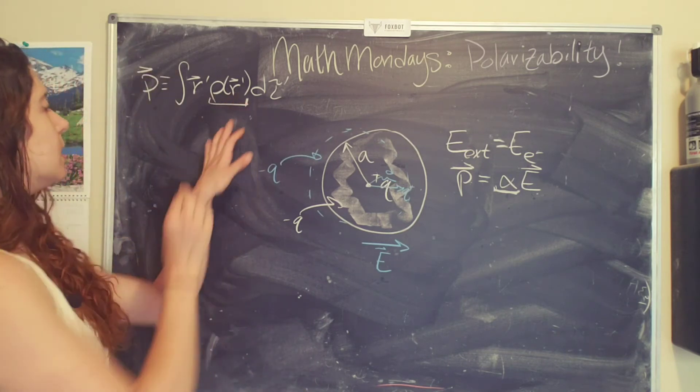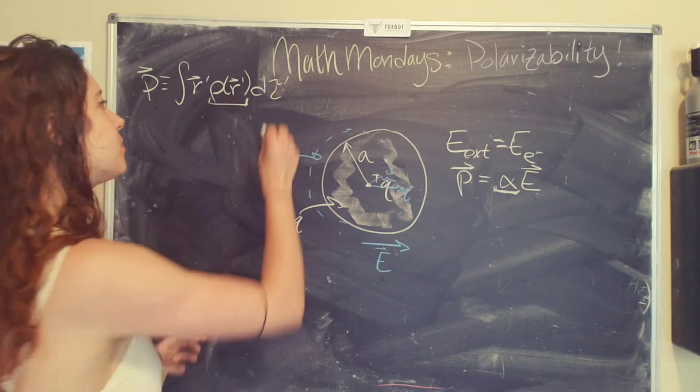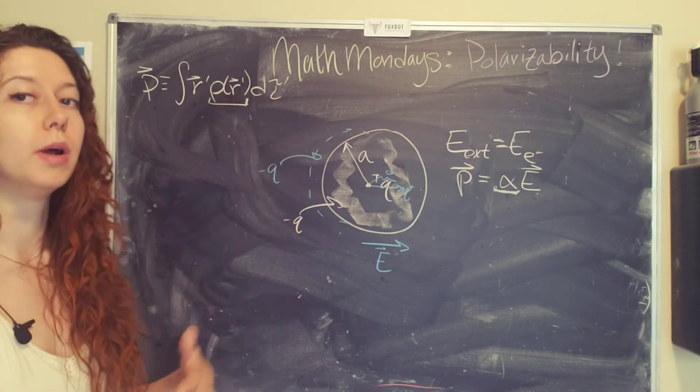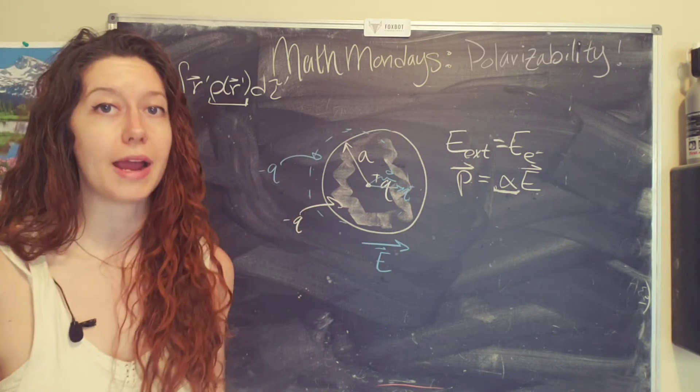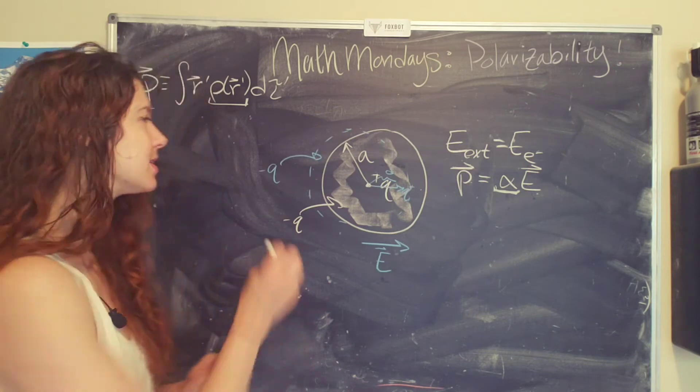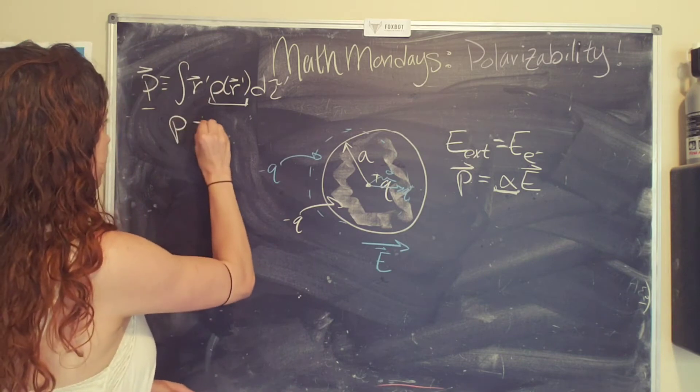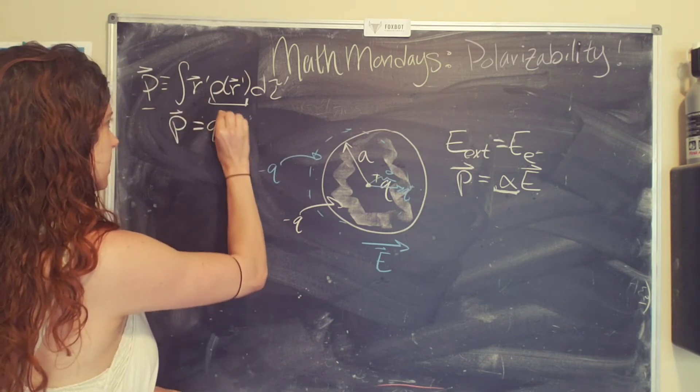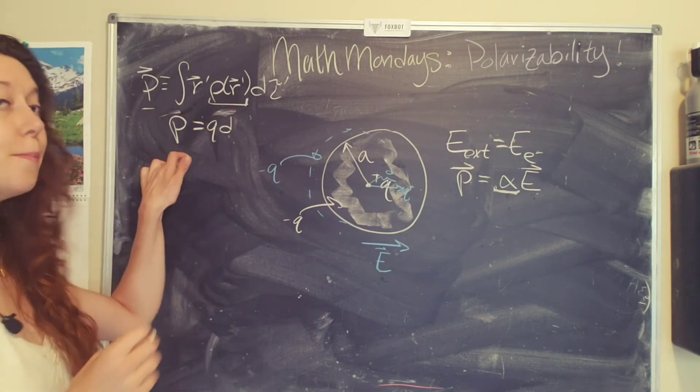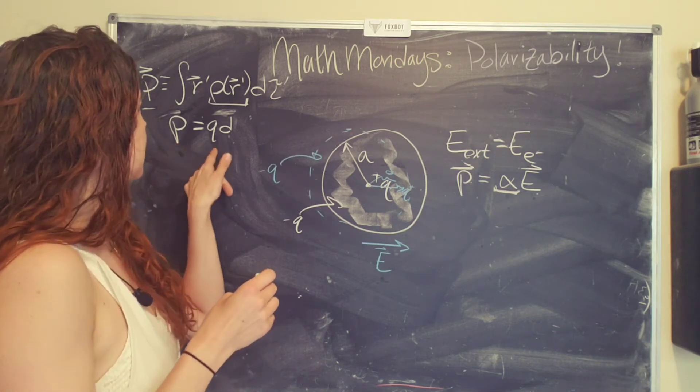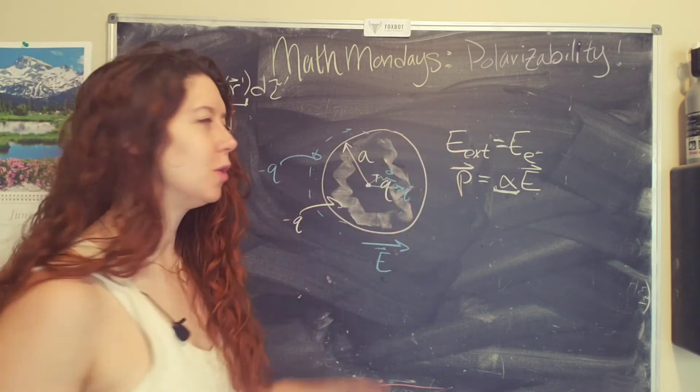So basically you are summing up the charge over a given distance from the atom, and then you're summing it up over the entire volume. Fortunately, a lot of folks have calculated the dipole moment for a variety of shapes and charge densities. So for two equal and opposite charges, the dipole moment is given by qd. And if we just want to look at the magnitude, we can get rid of the vector signs. So the magnitude of the dipole moment for equal and opposite charges is just q times d.